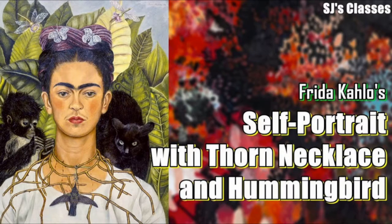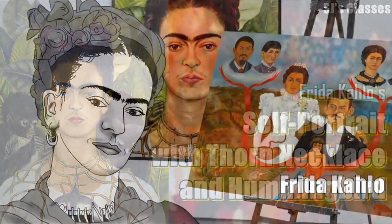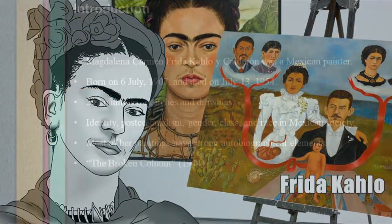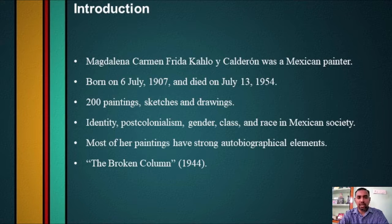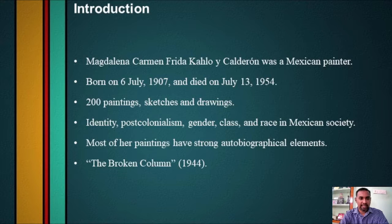The painting is titled Self-Portrait with Thorn Necklace and Hummingbird, made by the Mexican painter Frida Kahlo. Her full name is Magdalena Carmen Frida Kahlo y Calderón. She was born on 6th July 1907 and died on July 13th 1954. Her artistic output comes to approximately 200 paintings, sketches and drawings. Through her paintings she explored questions of identity, post-colonialism, gender, class and race in Mexican society. Most of her paintings have strong autobiographical elements, and life experience is a common theme in Kahlo's works.